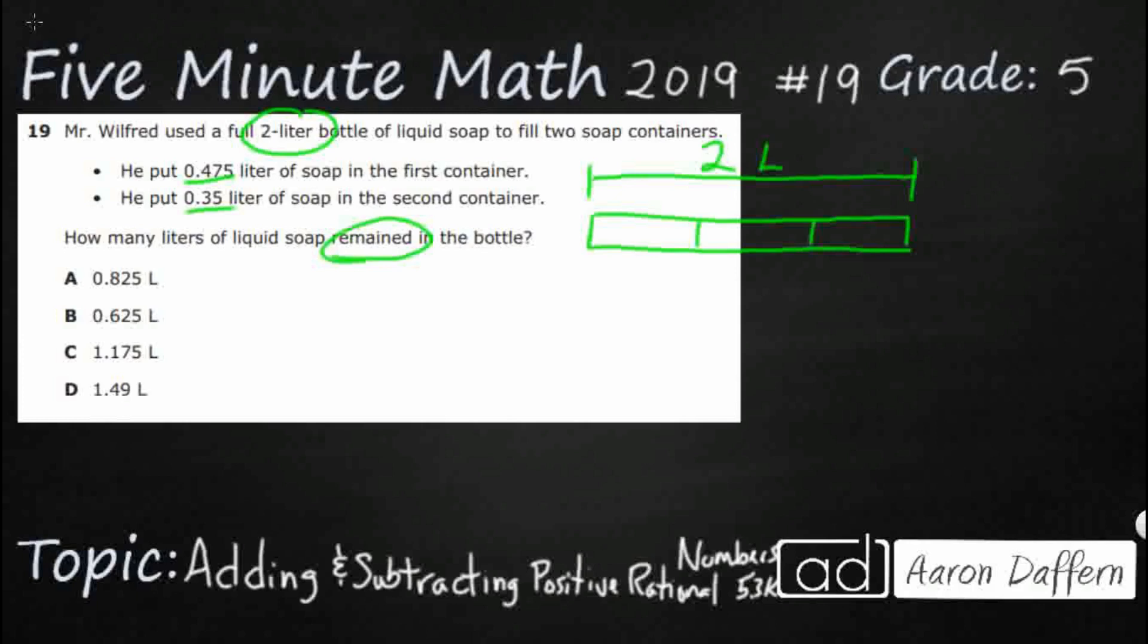So this first one is 0.475. That's 475 thousandths. I'll put a little capital L right there. Second chunk is 0.35, 35 hundredths of a liter. And then what we're looking for is that last chunk, how much is left.